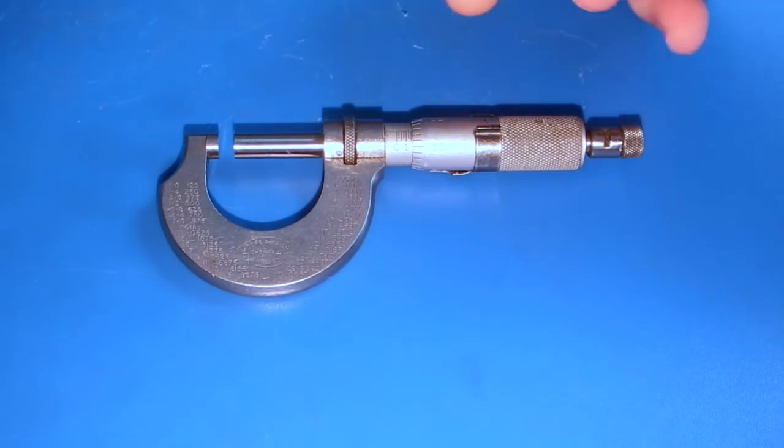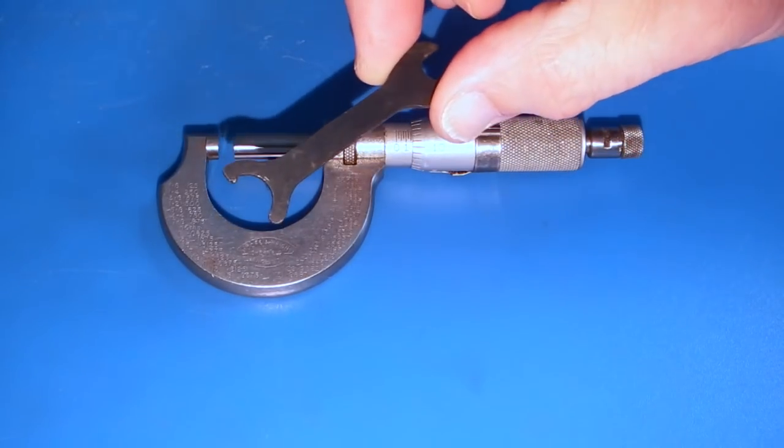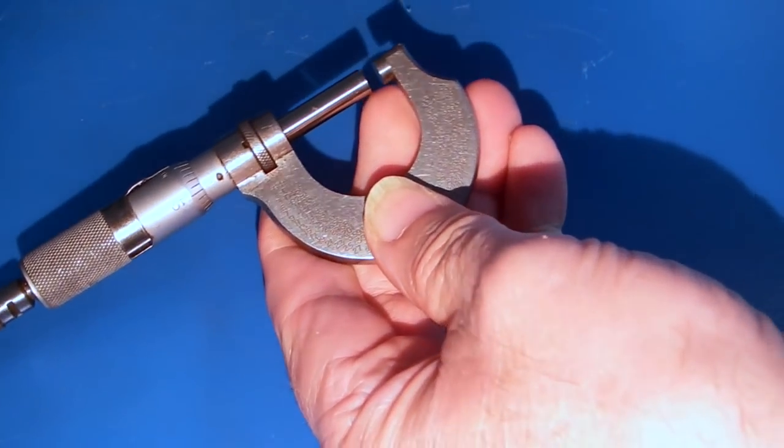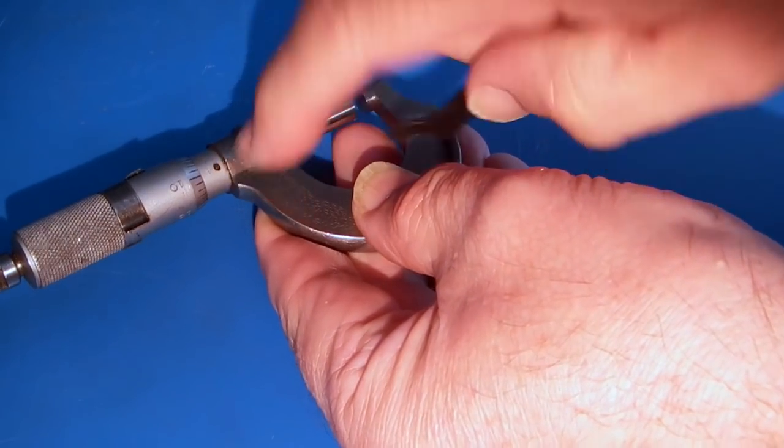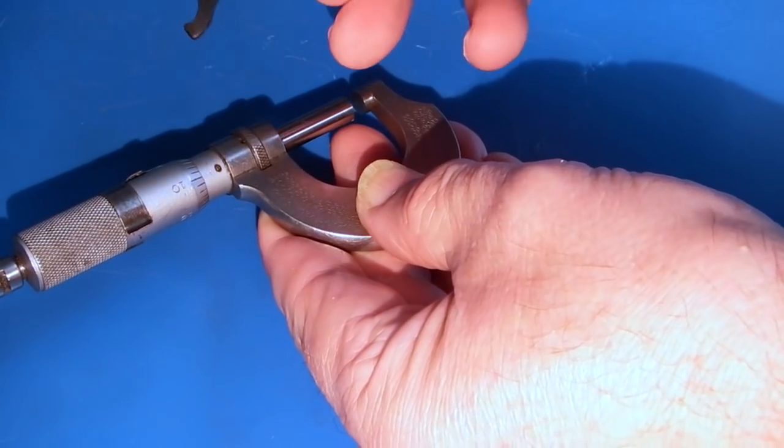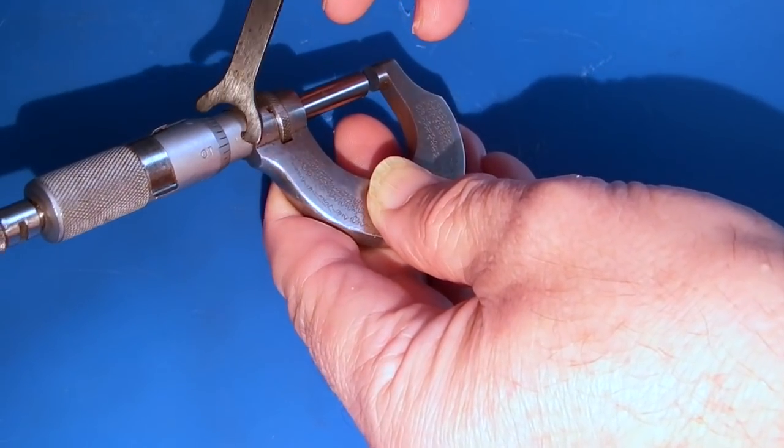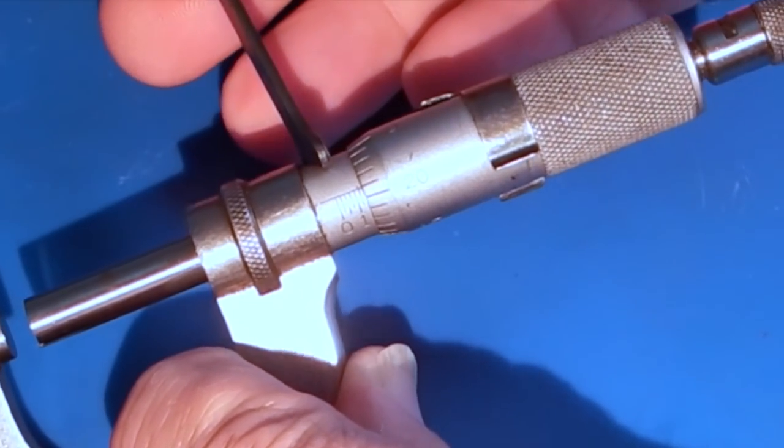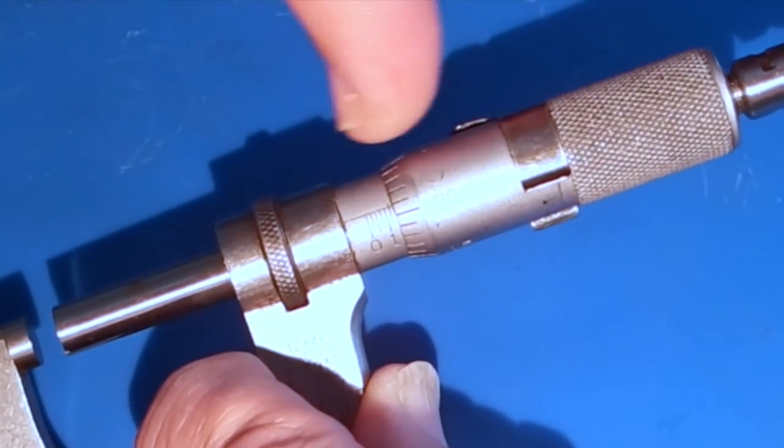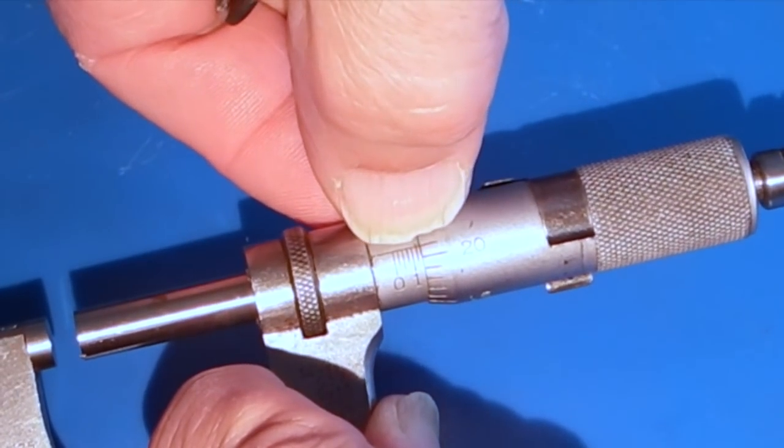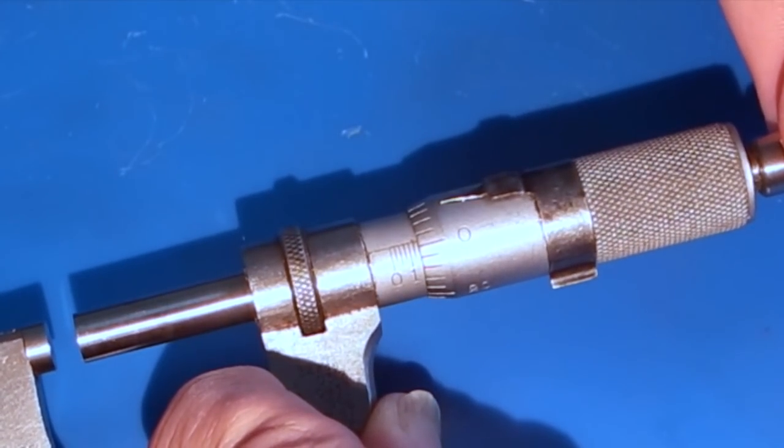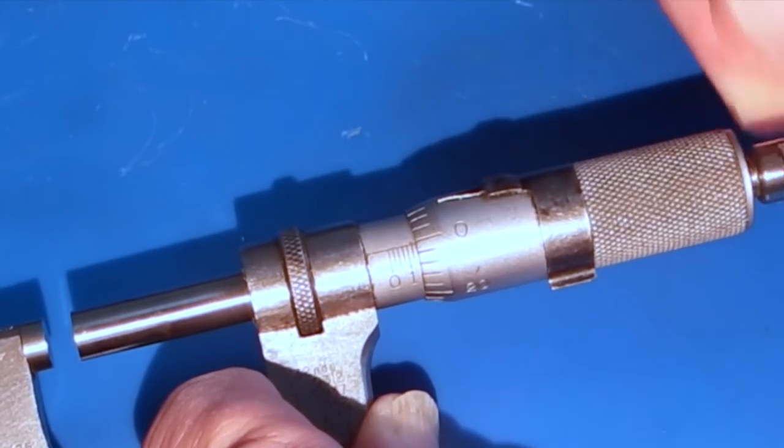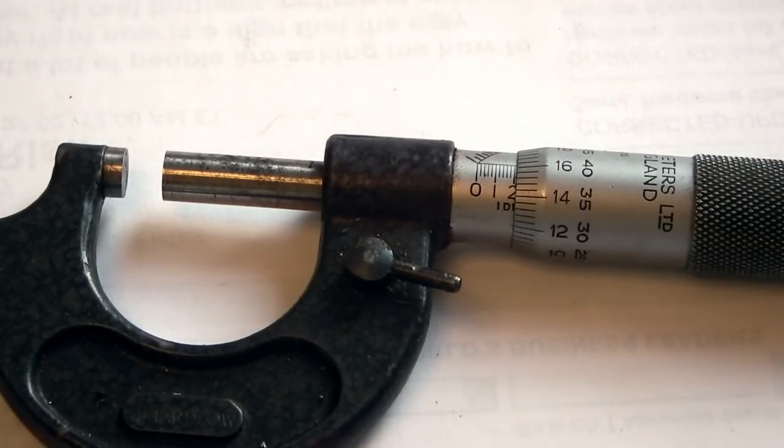To adjust the micrometer, you take your spanner which you should have been supplied with the micrometer. If you turn it over on the back, you can see a small hole there. This spanner just fits into that hole, and you turn the body of the micrometer so that the datum line lines up with your zero when you've got your slip gauges in. And that's how you reset the zero. This is a combination micrometer.